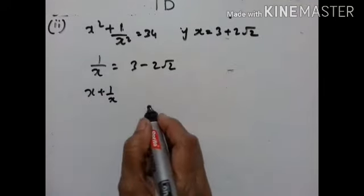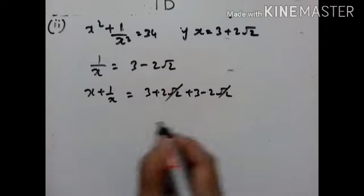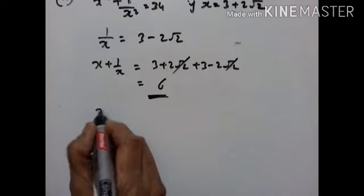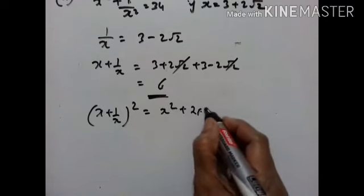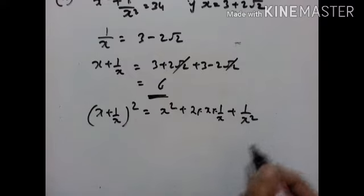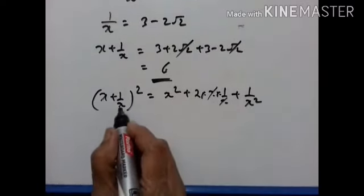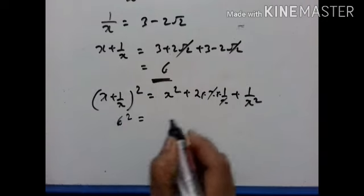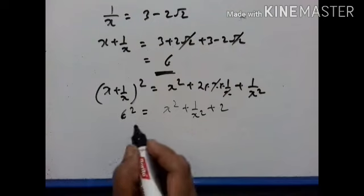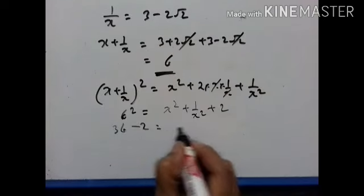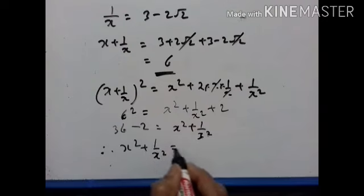x plus 1/x equals (3 plus 2√2) plus (3 minus 2√2) = 6. The √2 terms cancel. Now (x plus 1/x)² = x² + 2 + 1/x², so x² + 1/x² = (x plus 1/x)² minus 2 = 6² minus 2 = 36 minus 2 = 34.